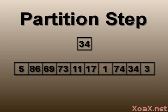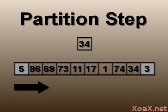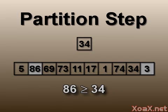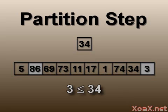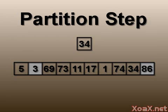We begin partitioning the array with two selectors at the first and last elements, shown here in gray. The first selector moves forward until it reaches an element that is larger than or equal to the pivot. Then we move the second selector backward until it reaches an element that is smaller than or equal to the pivot. Once both conditions are met, we swap the values.